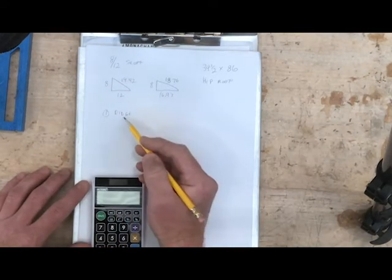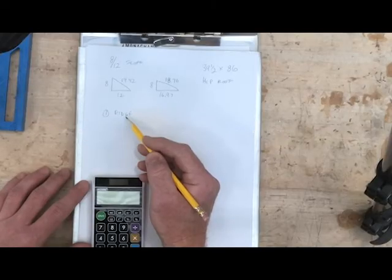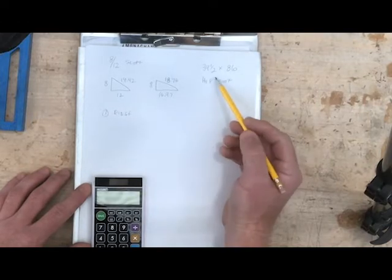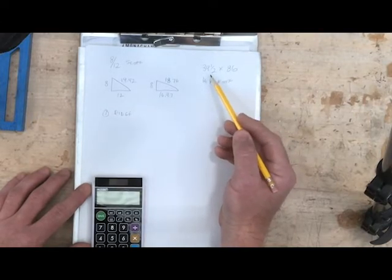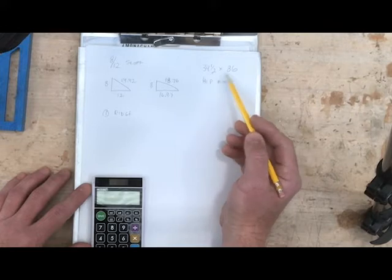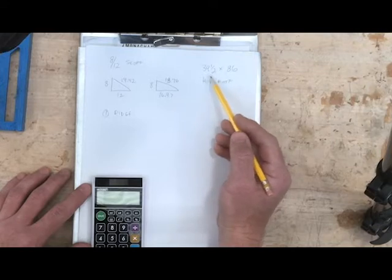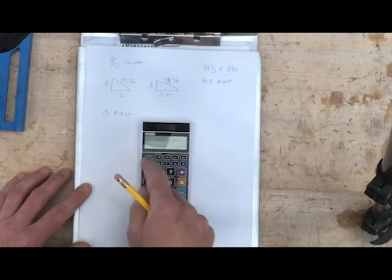Let's go ahead and figure out the theoretical length of the ridge, and then we will do the actual length of the ridge. If we remember, the way to calculate the ridge is to take the length of the building, subtract the span or the width of the building, and the difference gives us the theoretical length of our ridge.